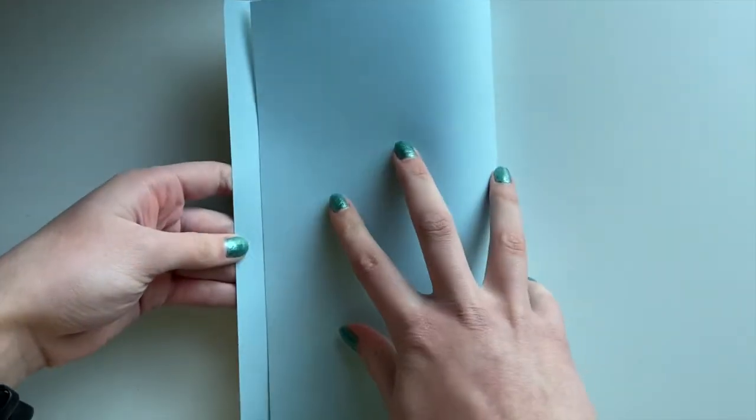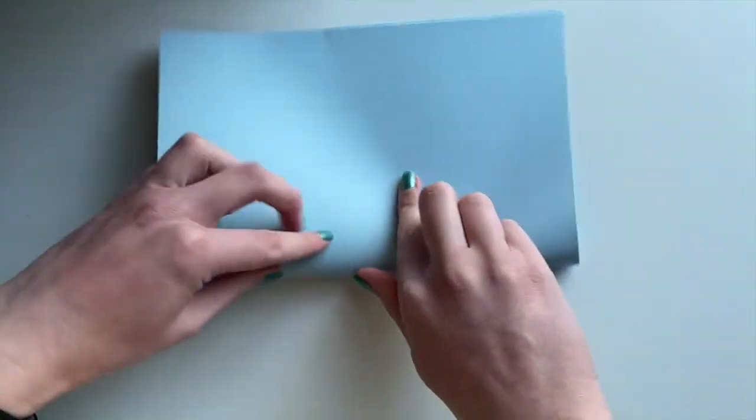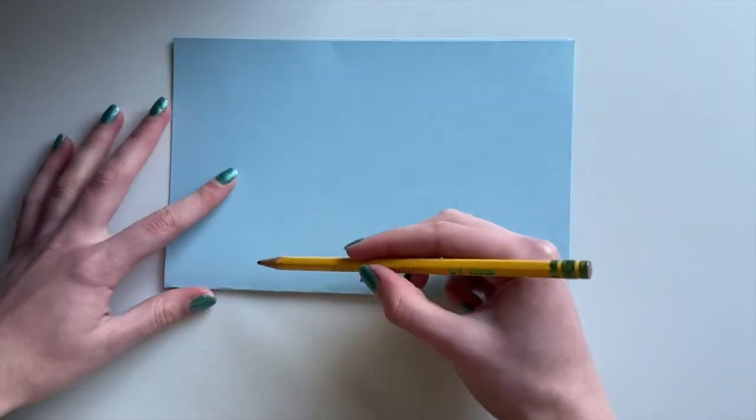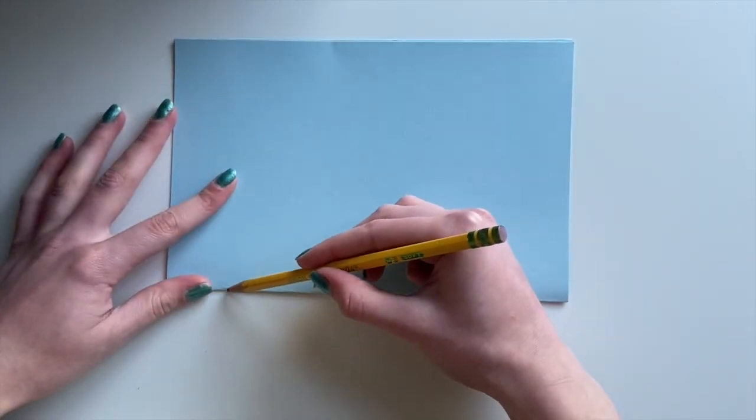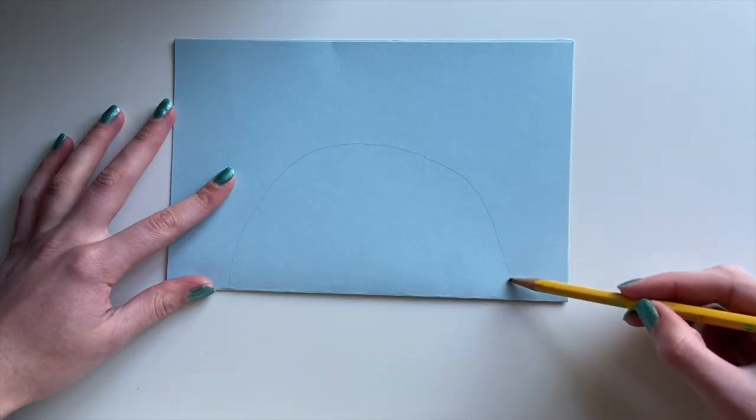The first step to making your rocking boat is going to be to take your blue piece of paper and fold it in half. The next step is to take a pencil and to draw a half of a circle, a semicircle, on your blue piece of paper that's folded in half.